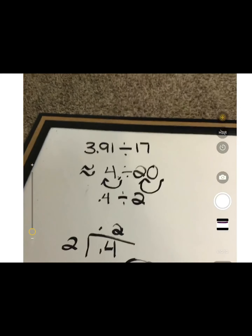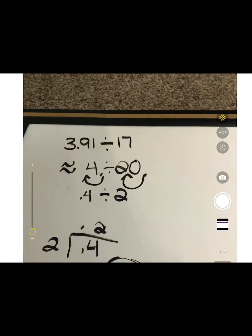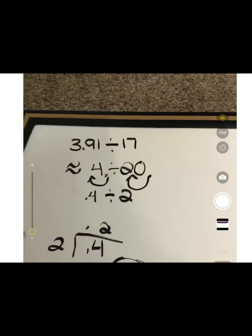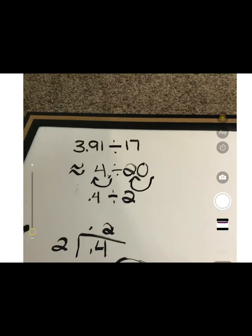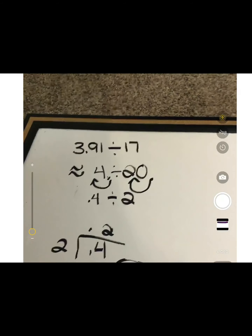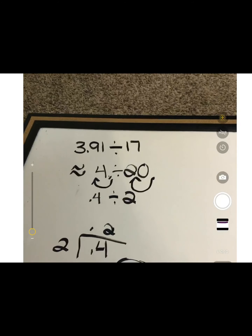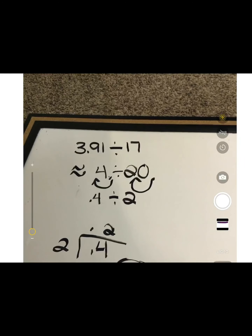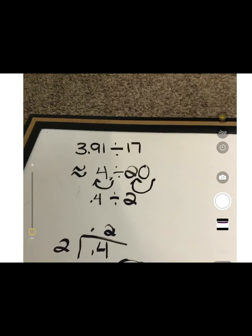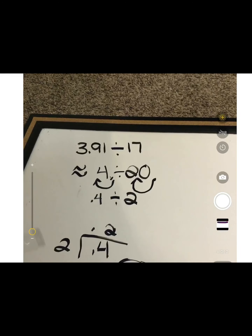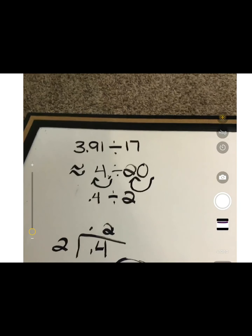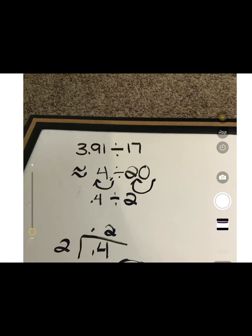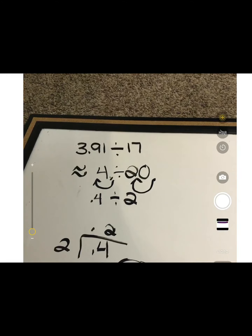For our problem before, our answer was 2. But this answer is 2 tenths, which would make sense because we were working with 39 and 1 tenths on our other problem to get 2. But now we have a smaller number that we're dividing — 3 and 91 hundredths. So our decimal just shifted.